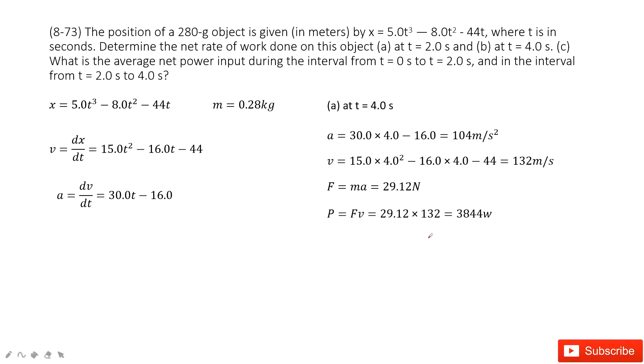The second one is very easy. You just need to find the power at t equal to 4 seconds at this certain point of time. So we just repeat everything, right? Get the acceleration, get the velocity, and get the force at this point of time. And then we use the power equal to the force times velocity, we get the final answer.